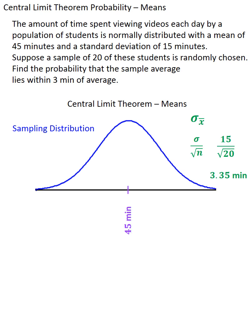Now, let's spend a minute analyzing the phrase lies within three minutes of average. That means that we're interested in the sample average being within three minutes of 45 minutes, otherwise thought of as 45 plus or minus 3. And essentially, that phrase is telling us that we want to know the probability that the sample average is between 42 and 48, which you'll notice is three minutes to the left and three minutes to the right of our sample average.